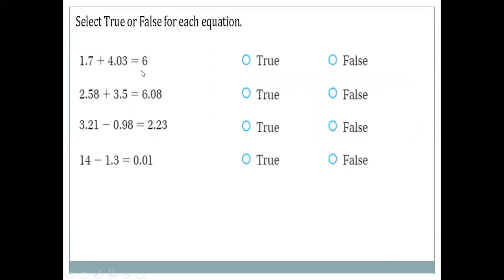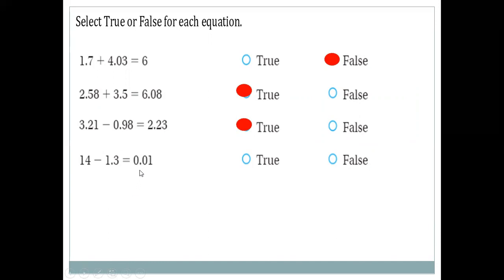Write 1.70 + 4.03 — is it 6? Obviously not, so false. Second: 2.58 + 3.500 = 6.08, which is true. Third: 3.21 − 0.98 = 2.23, which is true. Fourth: you can write it as 14.0 − 1.3 and 0.01, which is obviously false.